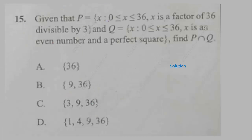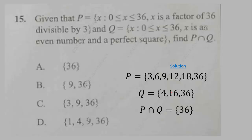Question 15: Given that P is such that x is from 0 to 36 inclusive, x is a factor of 36 divisible by 3, and Q is 0 to 36 inclusive, x is an even number and a perfect square. We have to find P intersection Q. Let's list the elements of each set. These are the elements of set P and then the elements of set Q. Here we have to find the intersection. The intersection will be 36, that's the only intersection there.